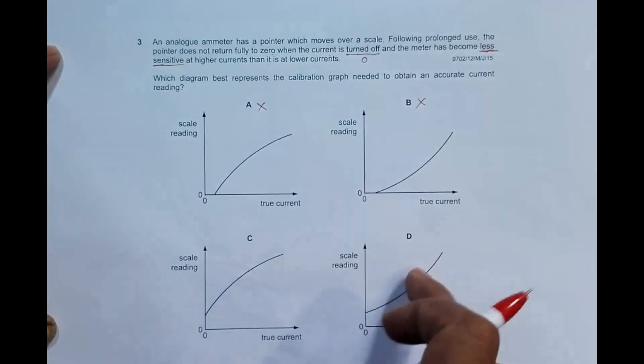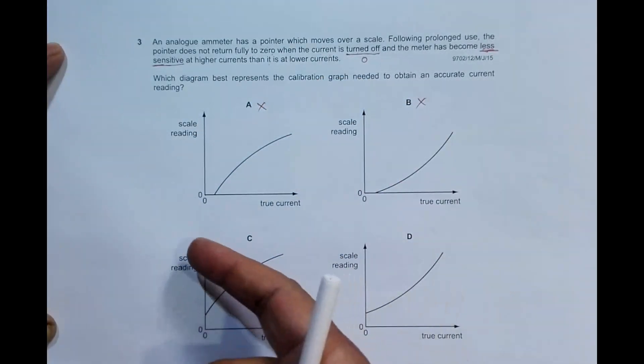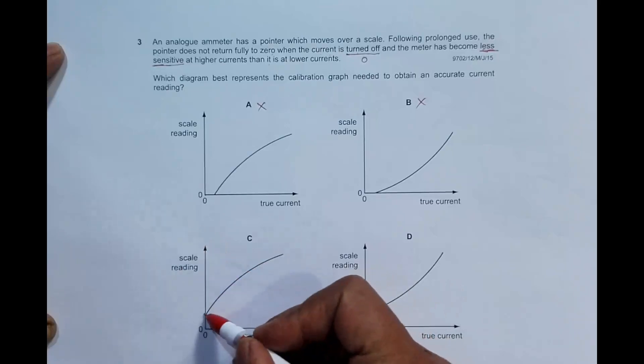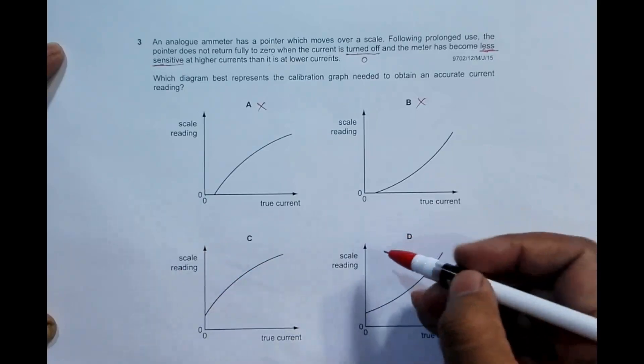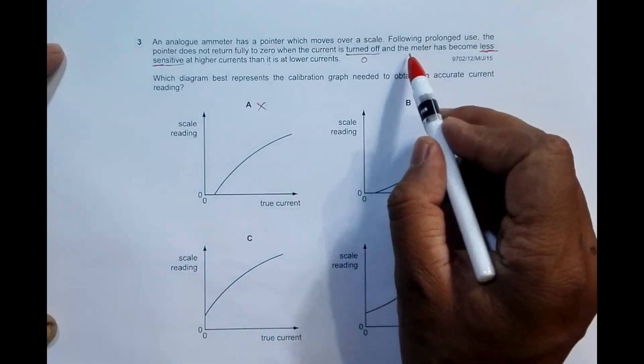These two can qualify because when current is zero, there is still some scale reading here. When current is zero, there is still some scale reading remaining here.